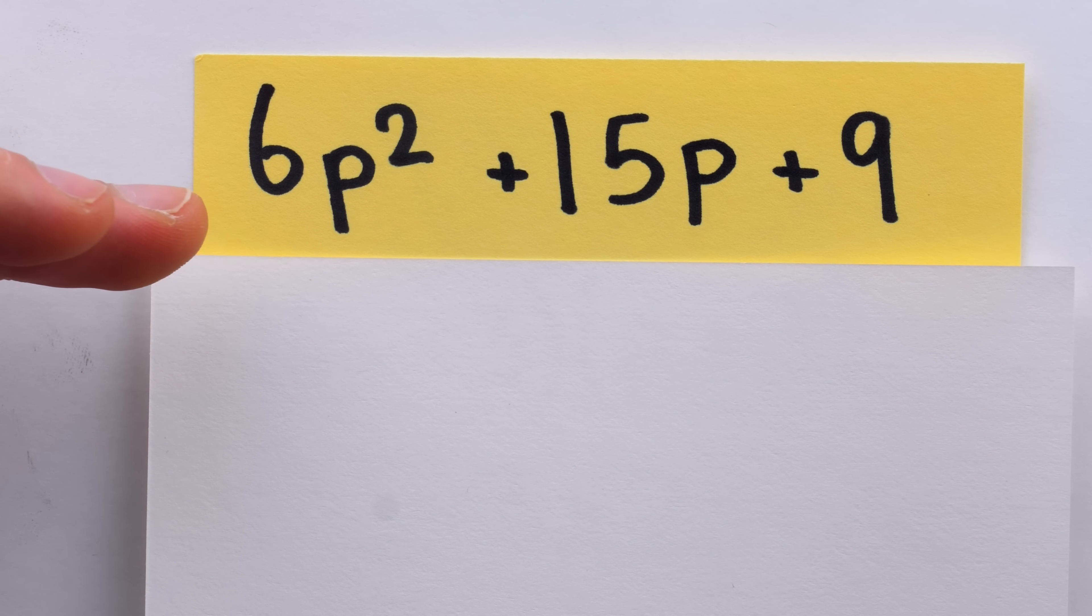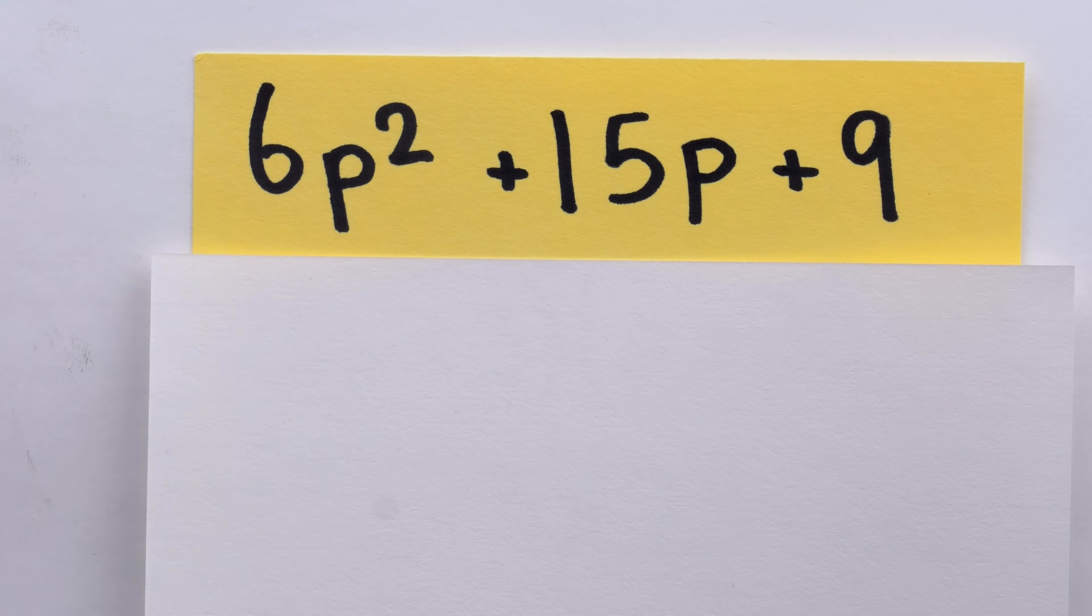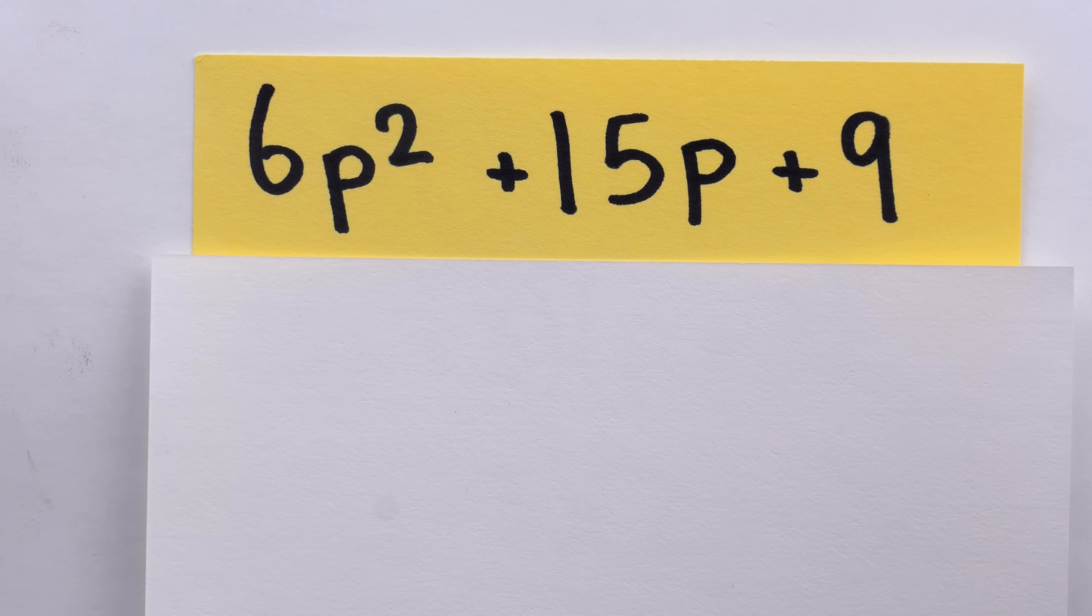When the leading coefficient is a composite number like 6, which has a ton of factors - 1, 2, there's 3 as well - you have to do a lot of guessing and checking potentially.